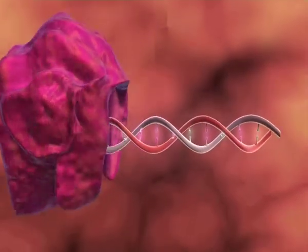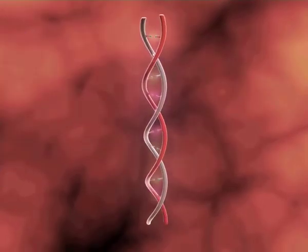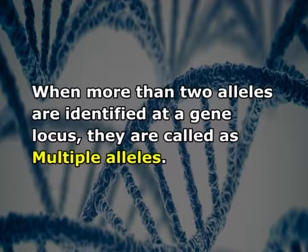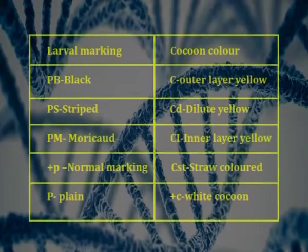The alternative form rarely observed is called mutant. There are two types of alleles: dominant and recessive. Dominant alleles are denoted using uppercase letters and recessive alleles are denoted by lowercase. When more than two alleles are identified at a gene locus, they are called multiple alleles. In silkworm, multiple alleles are found for many traits like the P locus involved in larval markings and the C locus for cocoon color.